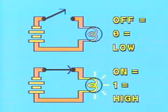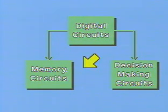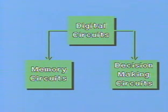These simple relationships form the basis of all digital electronics. The circuits used in digital electronics fall into two fundamental categories: memory circuits and decision-making circuits. Memory circuits are used to store digital information. Each individual memory circuit stores either a low voltage or a high voltage. We will study memory circuits in a later lesson.